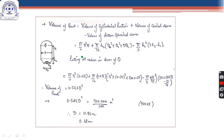Volume of the cylindrical portion = π/4 · d² · h. Volume of the conical dome = π/12 · h2 · (d² + d3² + d·d3). Volume of the bottom spherical dome = π/3 · h3² · (3r3 − h3). So: Volume of tank = Volume of cylindrical portion + Volume of conical dome − Volume of bottom spherical dome.